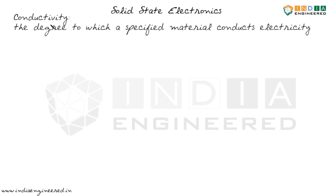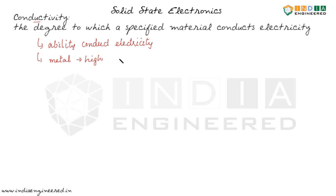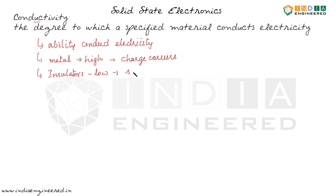Conductivity is the ability of a material to conduct electricity. Metals are very good conductors and have high conductivity because they have a large number of charge carriers. In the case of insulators, they have low conductivity because there is a scarcity of charge carriers.